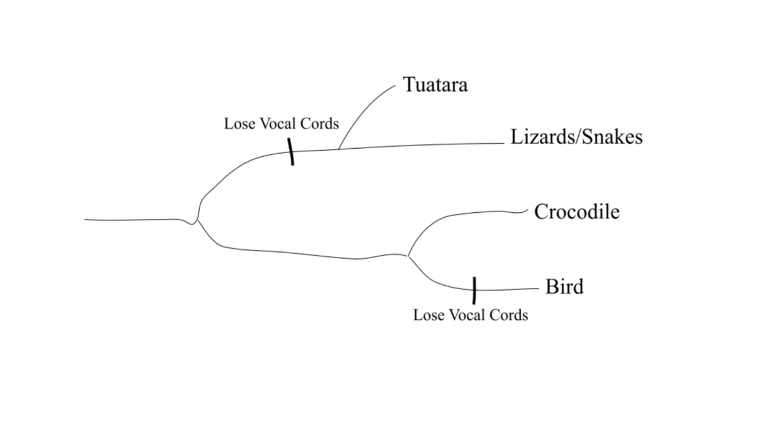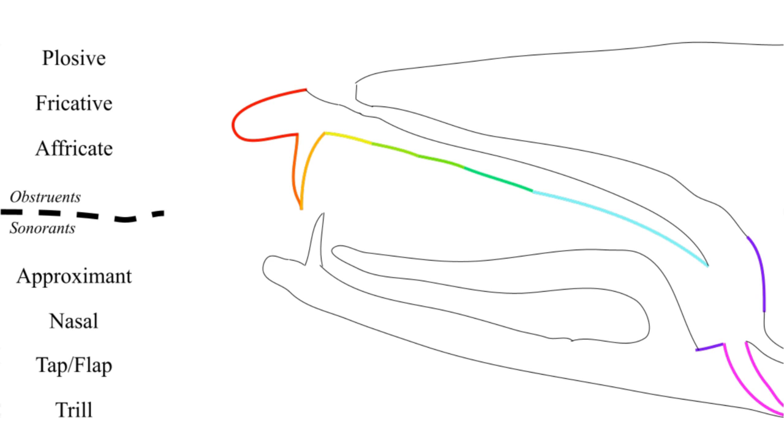Unlike all other reptiles, crocodiles have not yet lost their vocal chords. And again, unlike all other reptiles, crocodiles have developed a secondary palate. So really, their mouth is very similar to a mammal's. That means we can focus on the differences.